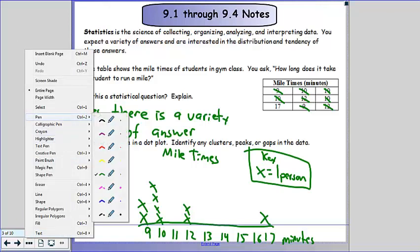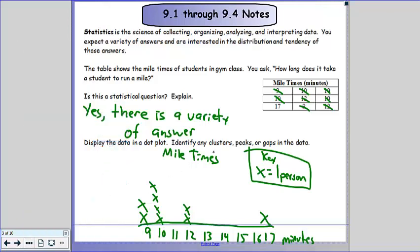There are a few extra questions that go along with it. It asks you to identify any clusters, peaks, or gaps. A peak will be the highest point. So the highest point is reached at ten, so ten minutes is the peak. A gap is a spot where there is no data. So anywhere from thirteen to sixteen. There is a very small gap at eleven, but looking for a bigger gap is usually more common.